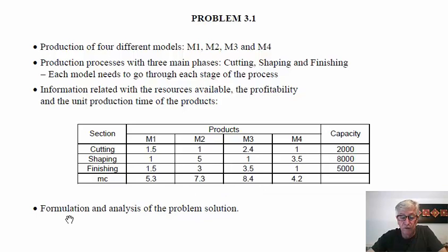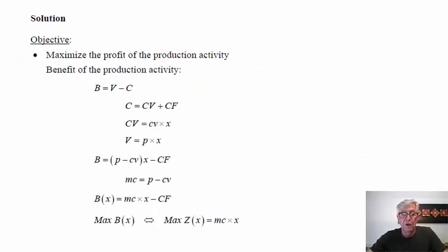We want to formulate the linear programming problem that allows us to determine the optimal production plan, provide the solution, and analyze it. The formulation starts by identifying the objective. In a production problem we want to produce some products with available resources as efficiently as possible — we want to maximize the profit of the production activity.